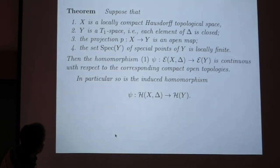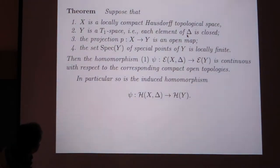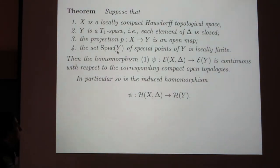So the main result I want to present is: If X is a locally compact Hausdorff topological space, Y is a T1-space, Y is the quotient space of X by partition delta, the projection is an open map, and this set spec(Y) is locally finite, it means that every element... And T1 means that each point is closed, right? So Y is T1 states that each element of Y is closed, right?